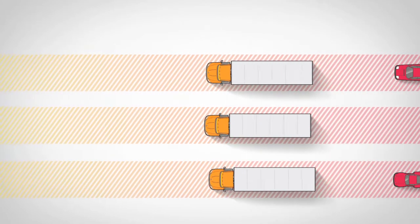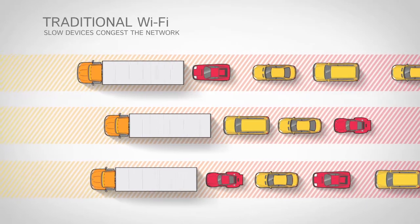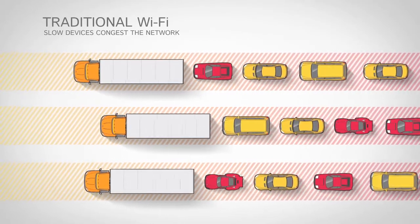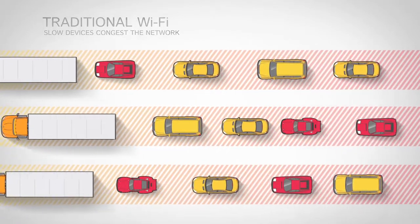Picture a three-lane highway where the slowest vehicles block the fastest ones. This is how traditional Wi-Fi networks operate. By not recognizing the difference in devices, they give equal priority to all transmissions, blocking fair access and congesting the network with traffic and delays.